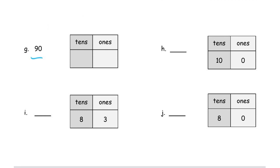That's ninety, which is nine tens and zero ones. This is ten tens and zero ones. That's the number one hundred, because ten tens makes a hundred.